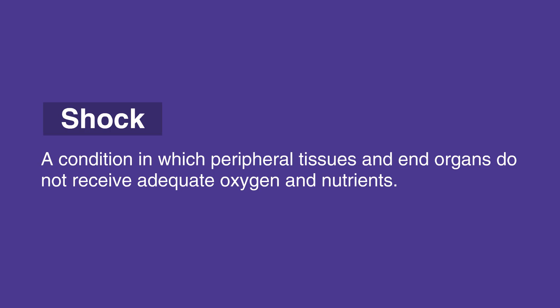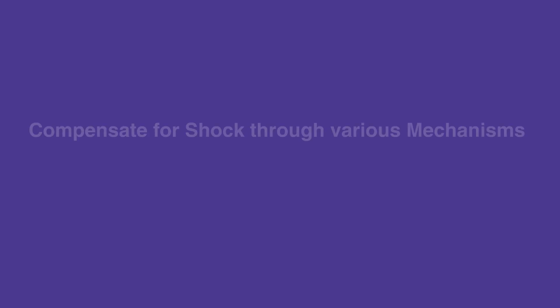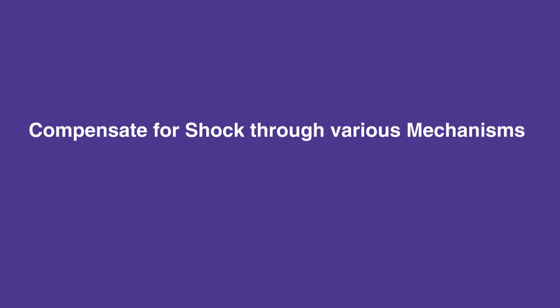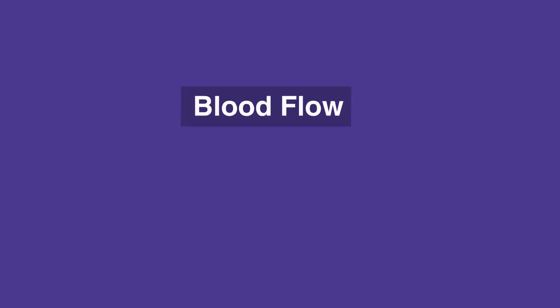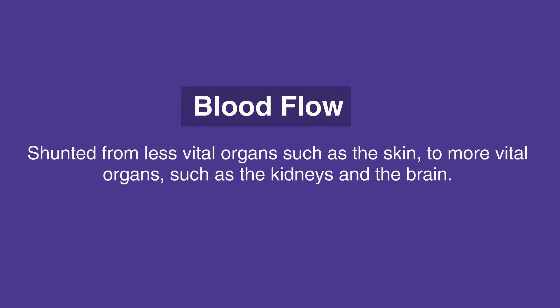Importantly, the body will attempt to compensate for shock through various mechanisms, most commonly through increased heart rate. The heart rate will increase in an attempt to increase cardiac output — that is, stroke volume times heart rate. Blood flow will be shunted from less vital organs, such as the skin, to more vital organs, such as the kidneys and the brain.